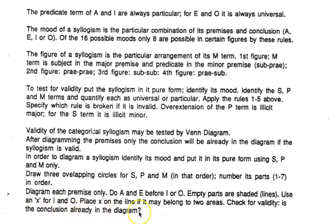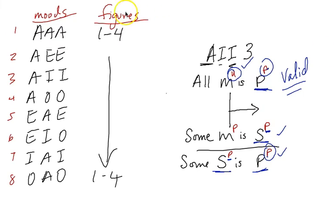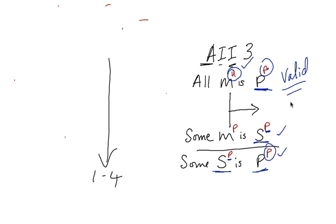And then we're going to check for validity. Is the conclusion already in the diagram? Now let's go back to the iPad. These are the moods and the figures that we're looking at. And AII-3, we said it was valid. So I would like to do the Venn diagram for AII-3 and show you how to set up the Venn diagram as we do that one. So if you can take out paper and pencil, we're going to make the model Venn diagram. We're going to need three overlapping circles. So do it just like this.